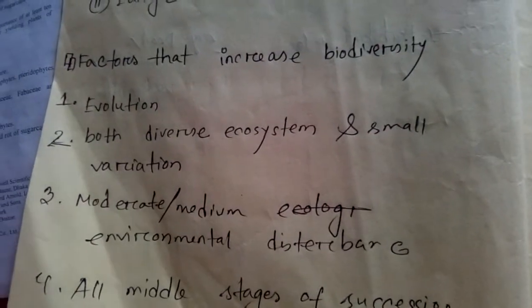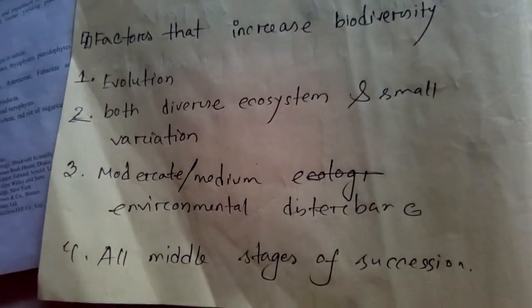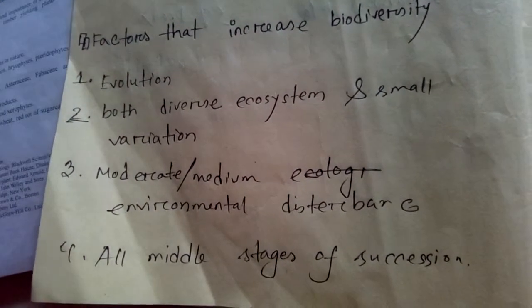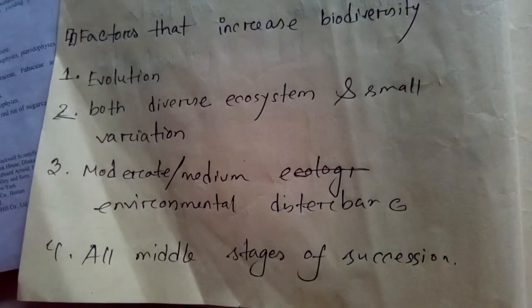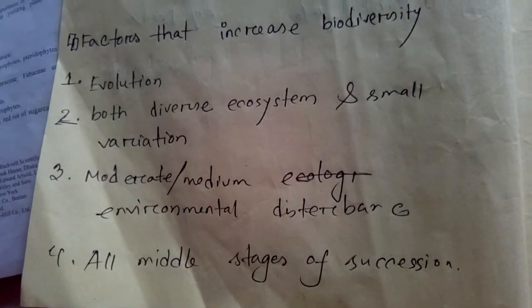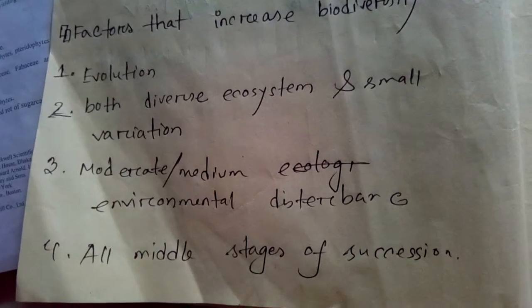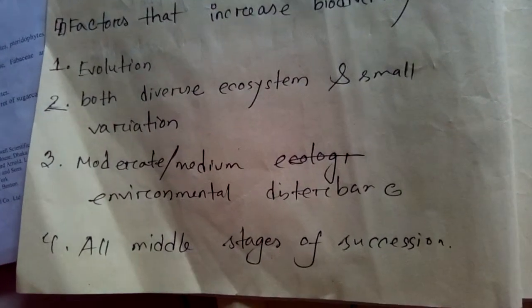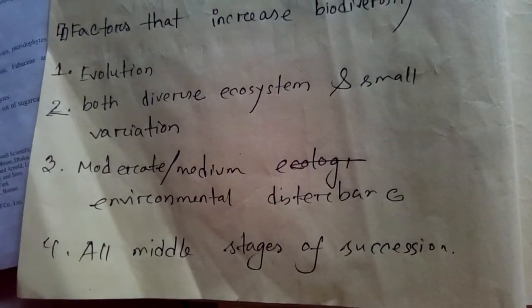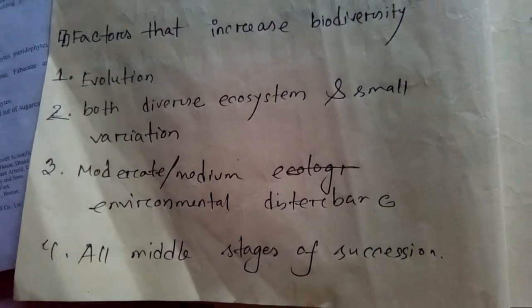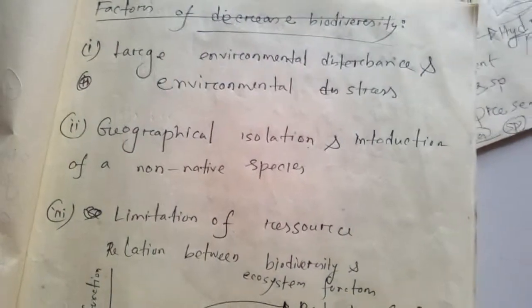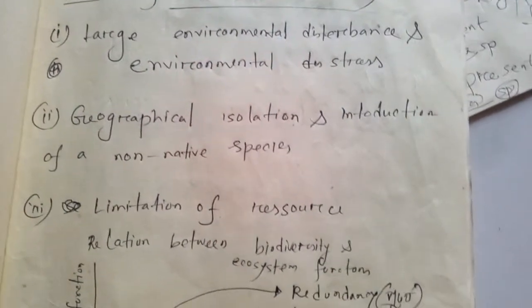Factors that Increase Biodiversity: No. 1 — Evolution, Diverse Ecosystem, Small Variation, Moderate and Medium Environment Disturbance, and All Middle Stages of Succession.